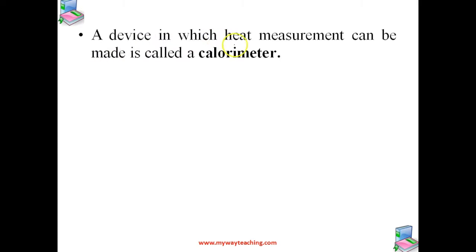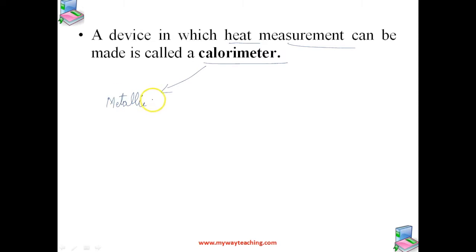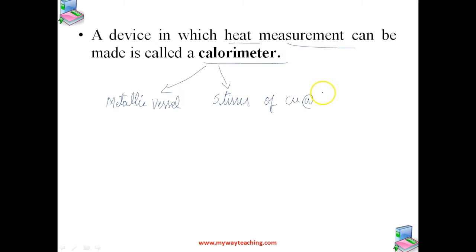A device in which heat measurement can be made is called a calorimeter. A calorimeter is a device used for the measurement of heat. It mainly consists of a metallic vessel and stirrer of the same material, like copper or aluminum.